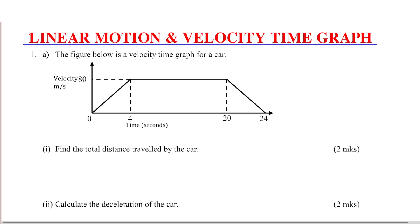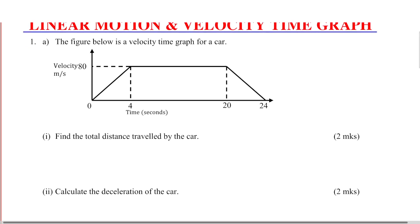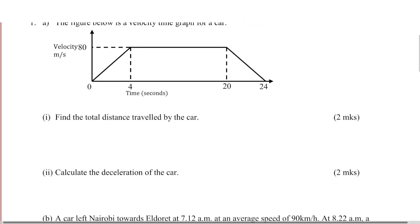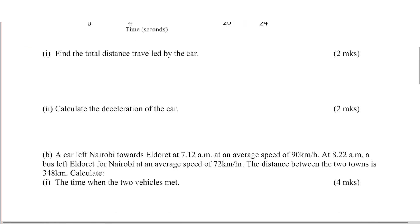Question 1a: the figure below is a velocity time graph of a car. You can see the y-axis is velocity in meters per second, and the x-axis is time in seconds. Find the total distance traveled by the car.